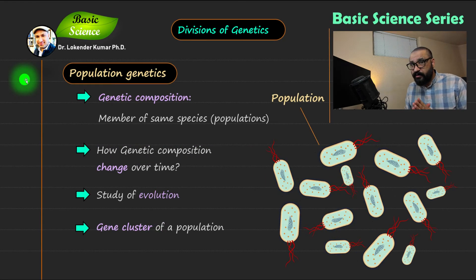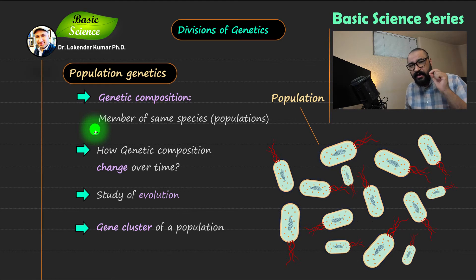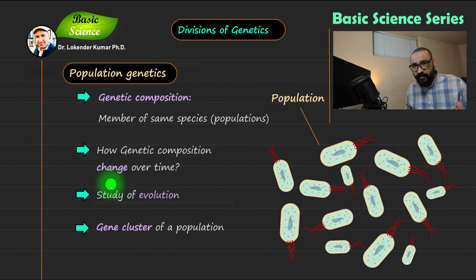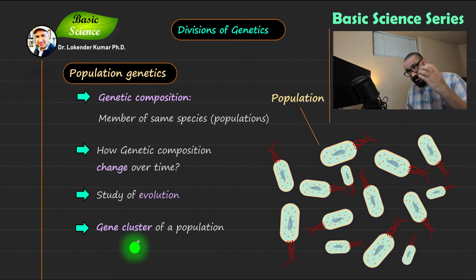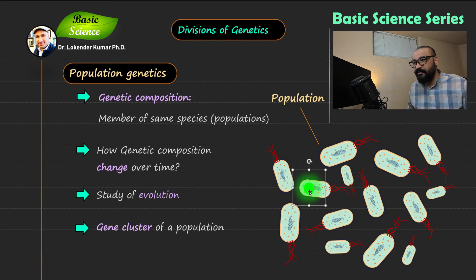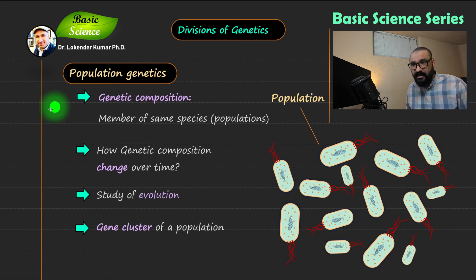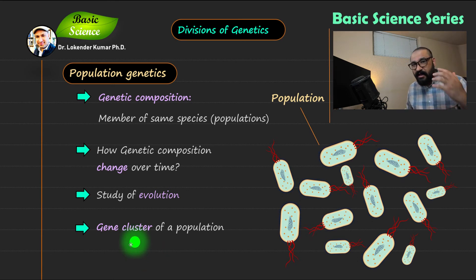Now we are going to discuss population genetics. In population genetics, the major point is that the number of individuals present in that particular species — how they are behaving and how their genetic composition is behaving — is important. As I have mentioned here, how the genetic composition of the population changes over time. Since we are discussing the population, that means we are discussing how that entire population changes over time, which is basically the study of evolution. So it is really important to understand that the study of evolution is part of population genetics. The final point is gene cluster of the population — how the gene cluster of that specific population is behaving over time.